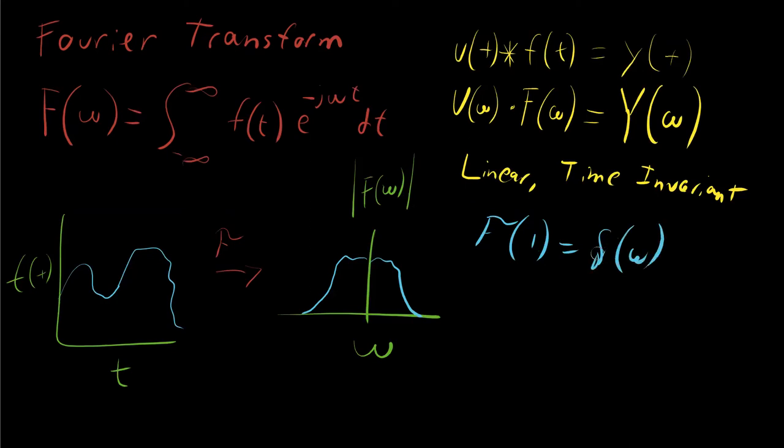The Fourier transform of the delta function is just one. The Fourier transform of e to the j a t is going to be equal to delta function omega minus a. This is representing time shifting or shifting in the frequency domain.